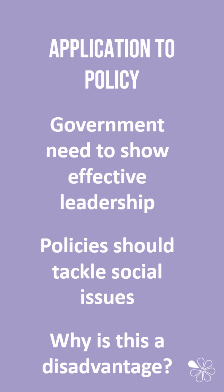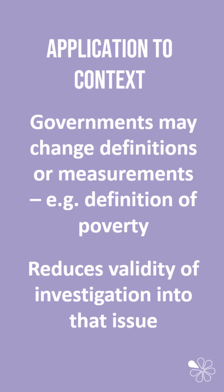The government needs to show effective leadership and demonstrate that their policies tackle issues. So why is this a disadvantage? If we apply it to the context, governments may change definitions or measurements — for example, they may change what counts as poverty to make their policy look as if it's effective.